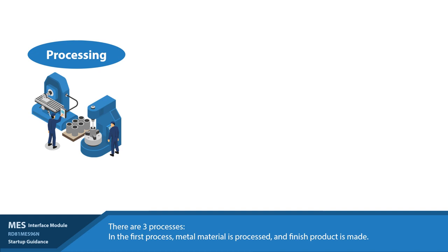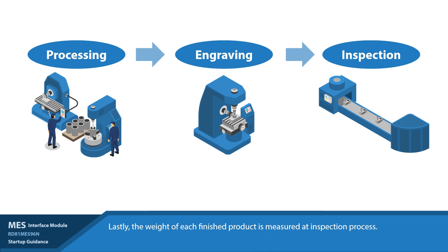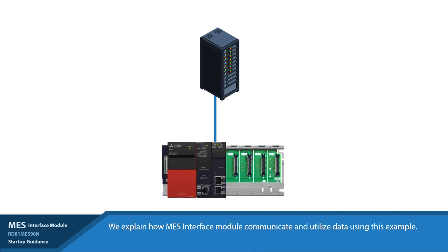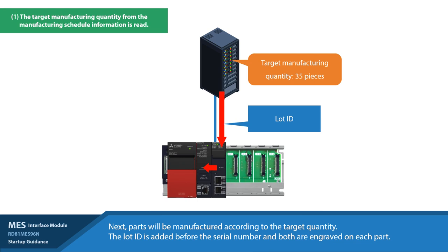By the end of the first stage, the metal part is formed and polished. Second, the engraving process in which a unique lot ID and serial number are engraved on the surface of each manufactured part. And lastly, the inspection process in which we verify the part is mechanically within tolerance and various data is recorded for future reference. The data flow for the three processes will be broadly divided into three parts. The first part is where the MES interface module obtains a manufacturing quantity from the production control database before the start of manufacturing. The manufacturing process is then started, the requested quantity of metal pieces are formed, and the unique lot ID and serial numbers are engraved on each part.